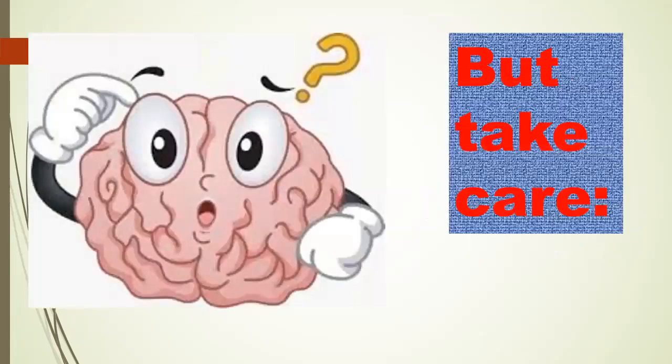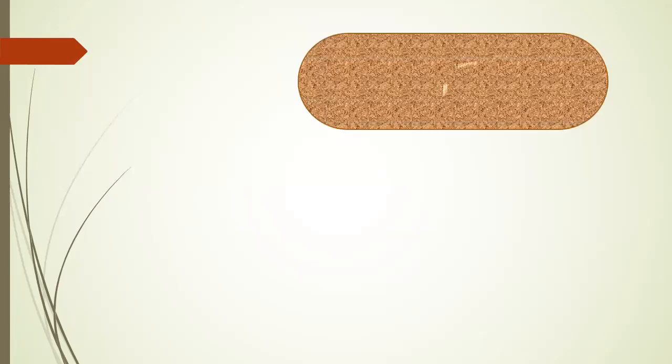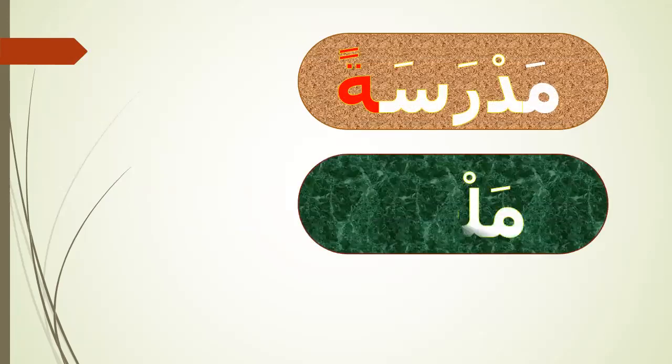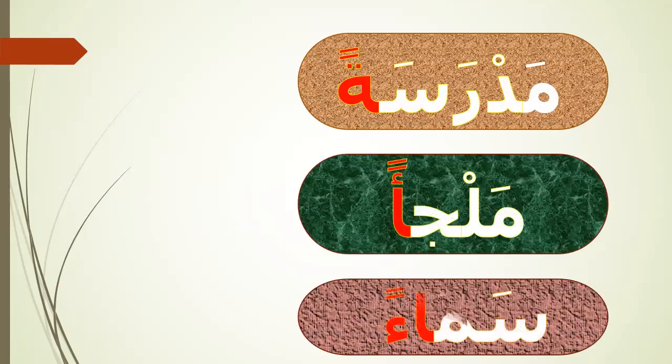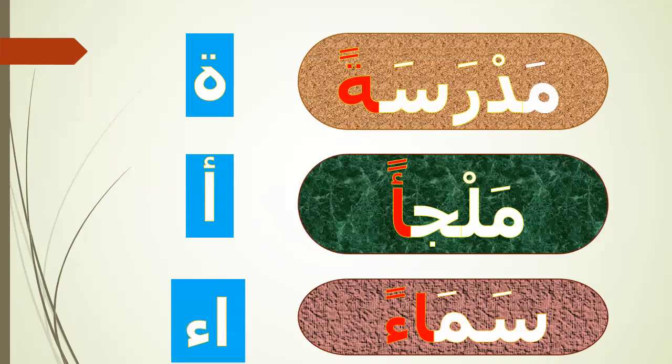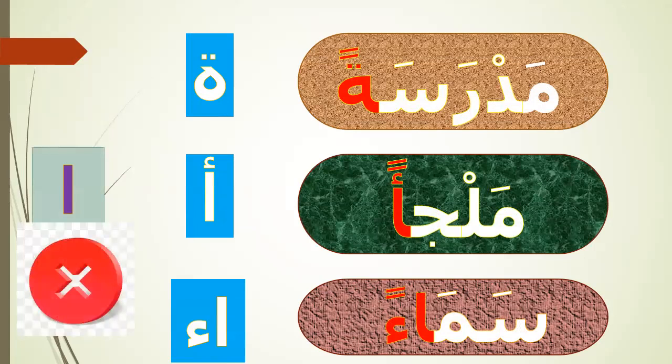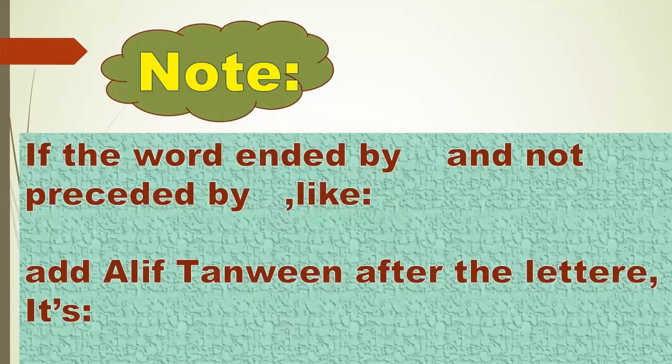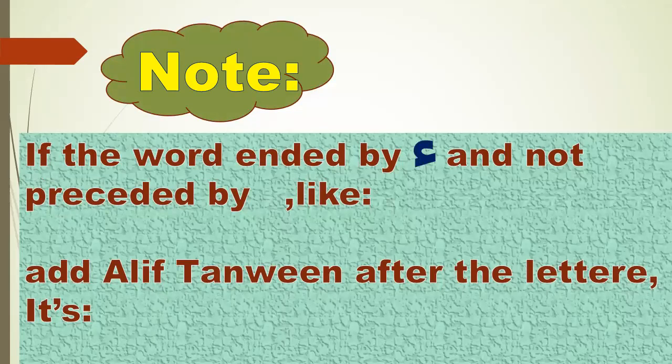But take care. Madrasa-tan, Mal-ja-an, Sam-aa-an. The first word ended by tamarbuta, the second word ended by alif, the third word ended by hamza preceded by alif mad. So don't add alif tanween. If the word ended by hamza and not preceded by alif mad like def, add alif tanween after the letter. It's def-an.